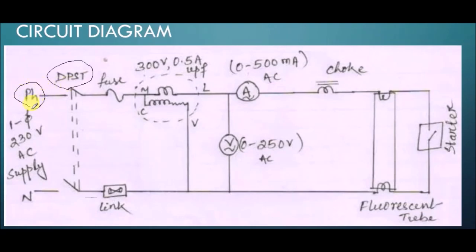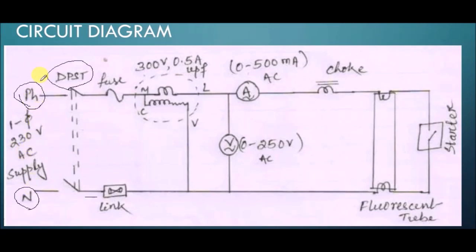So what is phase and neutral? Phase and neutral are the two terminals of a single phase alternating supply — alternating voltage. Single phase means 230 volt AC supply. If instead of AC it is DC, then instead of writing phase and neutral we should write plus and minus. Plus and minus corresponds to DC supply, and phase and neutral corresponds to AC supply.